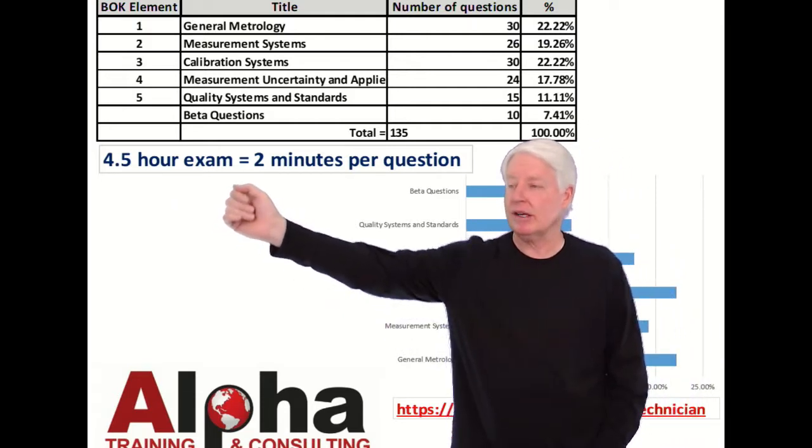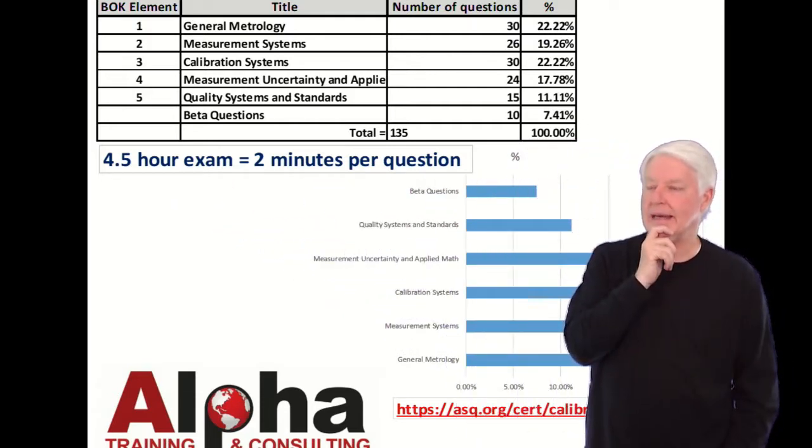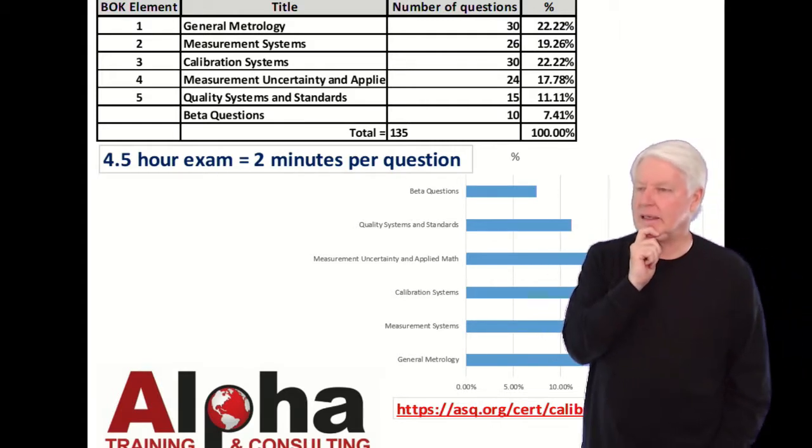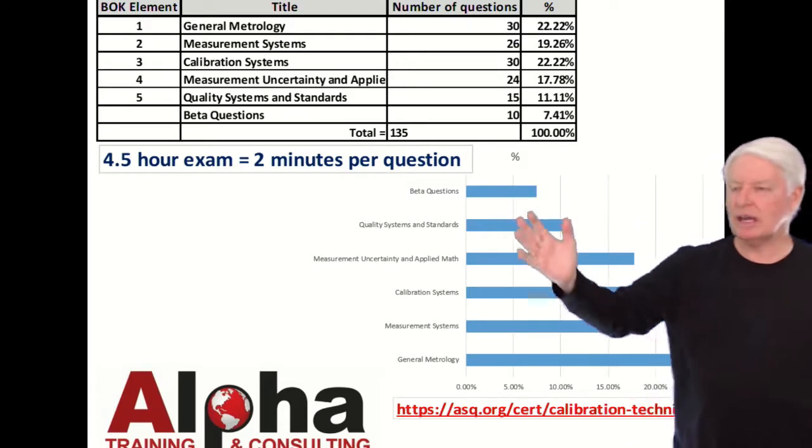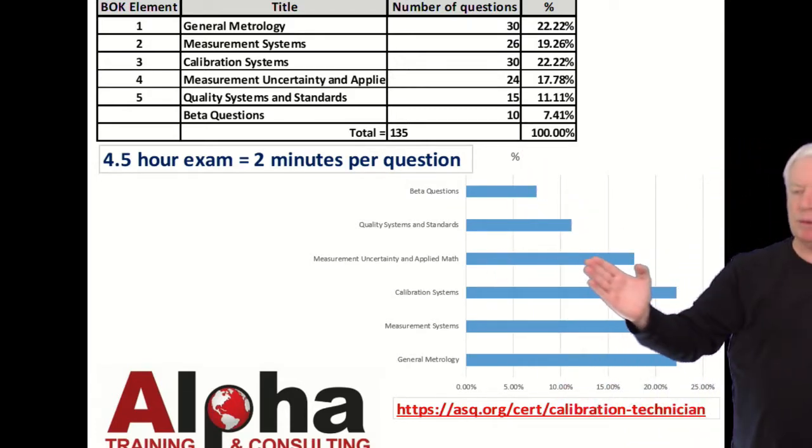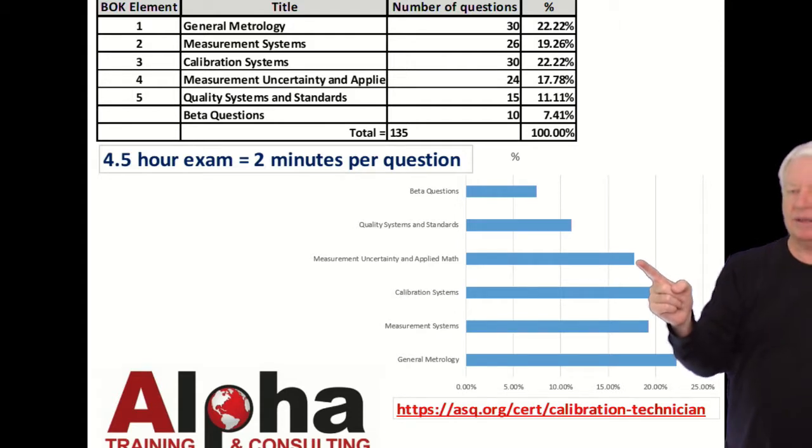It's a four and a half hour exam. It's two minutes per question, which isn't bad for an ASQ exam. This bar chart shows you the same thing, and as you can see, measurement uncertainty applied math is the most difficult element of the body of knowledge for most students.